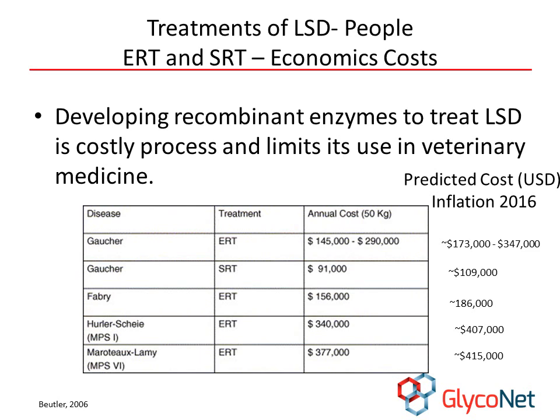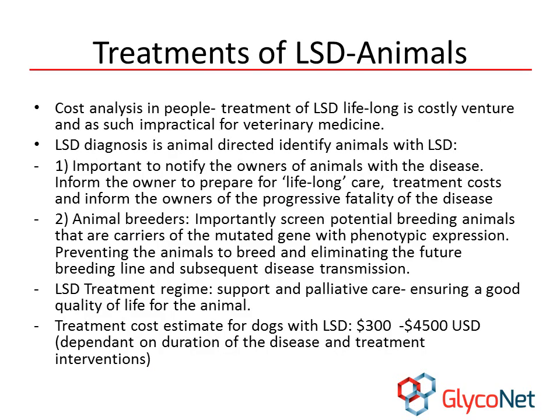Treatment of patients with lysosomal storage diseases is very costly. The slide shows the cost in 2006 of enzyme replacement therapy for a single individual on an annual basis, with the right column showing a rough approximation of present costs following inflation. The latest treatments are costly and prohibitive in veterinary medicine, and as such, the cost of diagnosing and treating companion animals ranges from $300 to $4,500 per animal, as treatment is directed only toward supportive and palliative care.